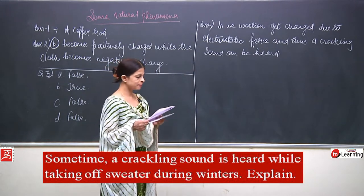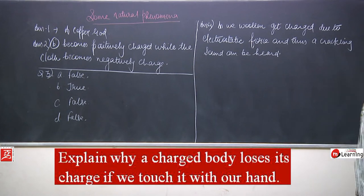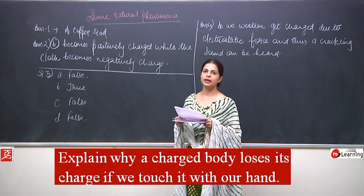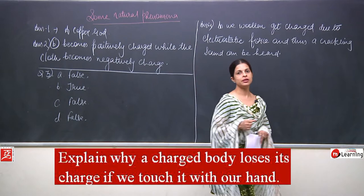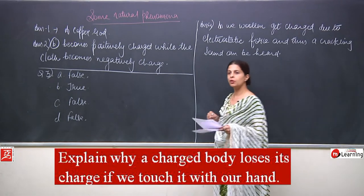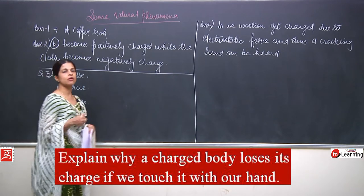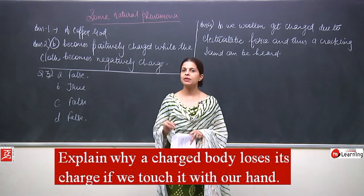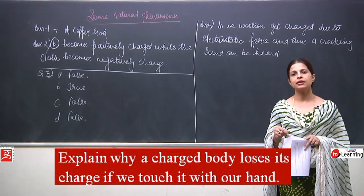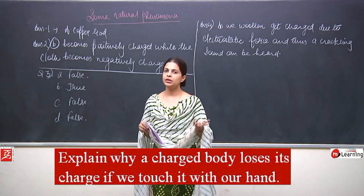Question number 5: explain why a charged body loses its charge if we touch it with our hand. As soon as we touch a charged body, the charge passes through our body to the surface of the earth, and thus the body gets discharged and loses its charge.